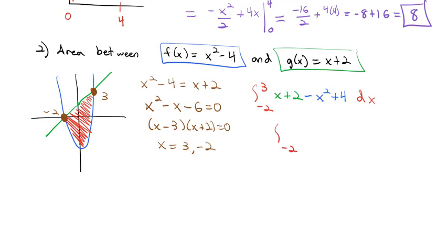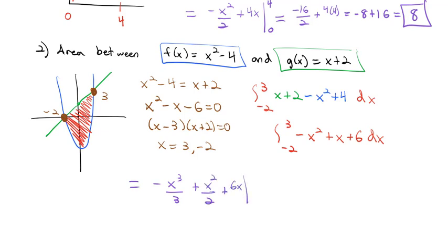Combining like terms, we integrate from negative 2 to 3 of negative x squared plus x plus 6 dx. Taking the integral, we get negative x cubed divided by 3 plus x squared divided by 2 plus 6x, integrated from negative 2 to 3. Let's plug in those limits of integration.